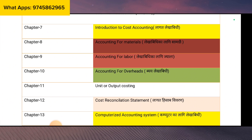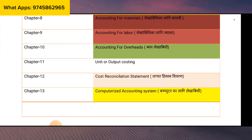Chapter 10 is Accounting for Overhead — transparency overhead. This covers how unit output costs are calculated, which is a very important topic. Chapter 12 means Cost Reconciliation Statement. The Cost Reconciliation Statement is normally in 3 marks.